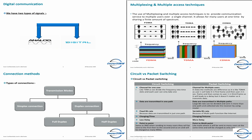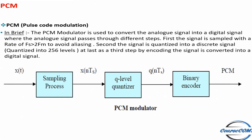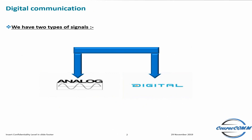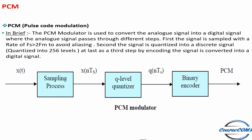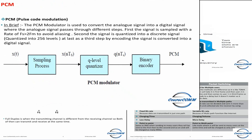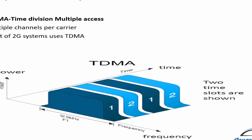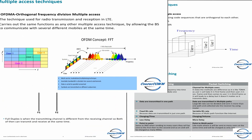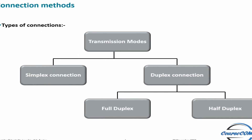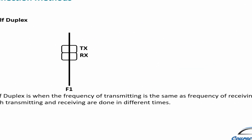Let's give a quick brief about the course content. In the first chapter, we give an introduction about signals and the difference between digital and analog signals, then describe how to convert from analog to digital signals using the Pulse Code Modulation method. In the second chapter, we cover multiple access techniques and explain each type. In the third chapter, we cover connection methods including different types of telecommunication connections and different duplex techniques.